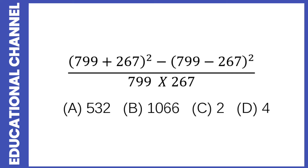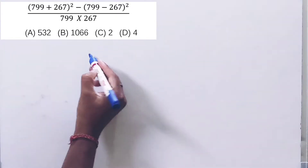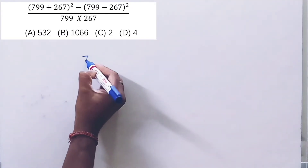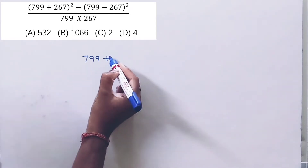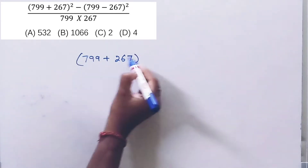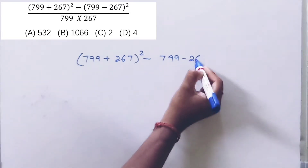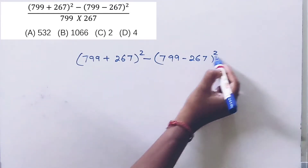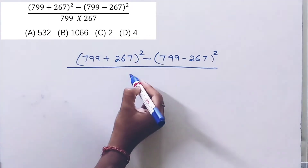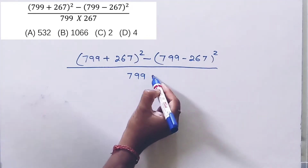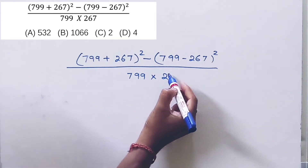799 plus 267, whole square minus 799 minus 267, whole square, divided by 799 into 267 is equal to?